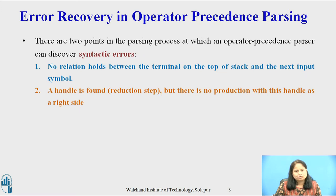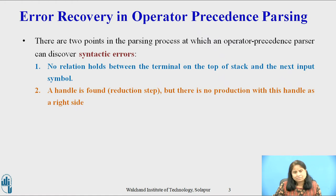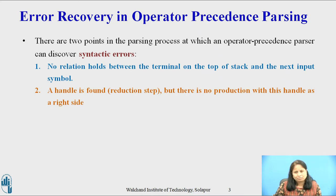There are two points in the parsing process at which an operator precedence parser can discover a syntactic error. First, no relation holds between the terminal on the top of the stack and the next input symbol. And second, a handle is found but there is no production with this handle as the right side.